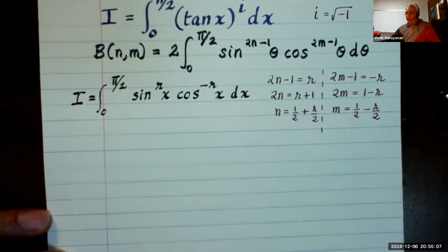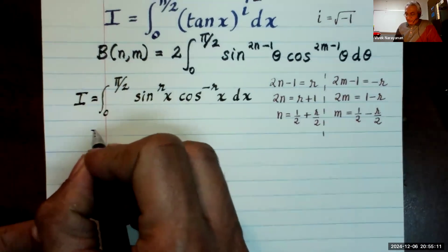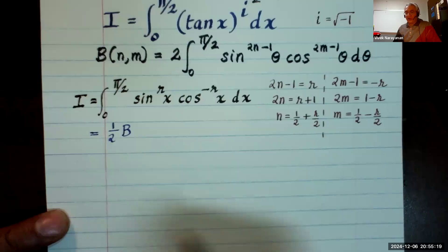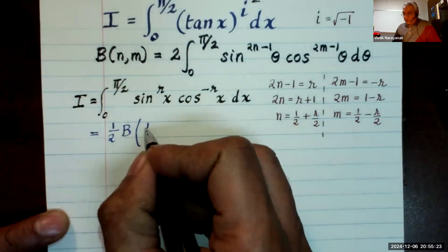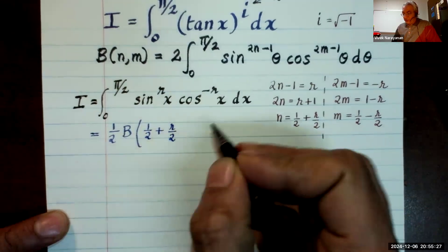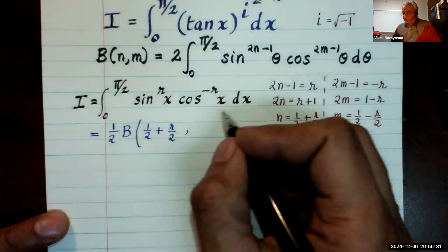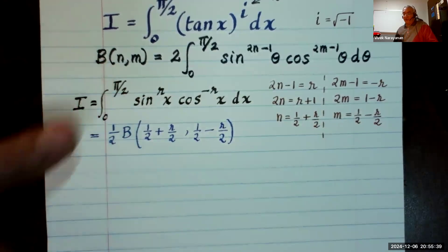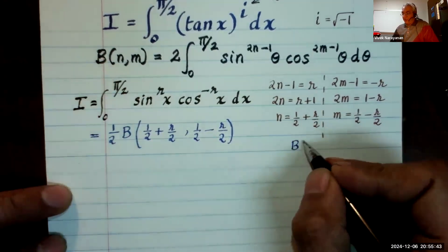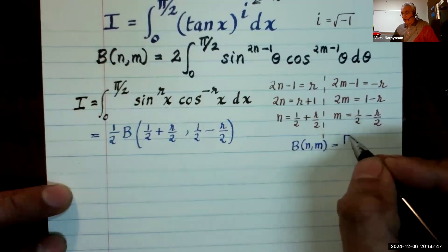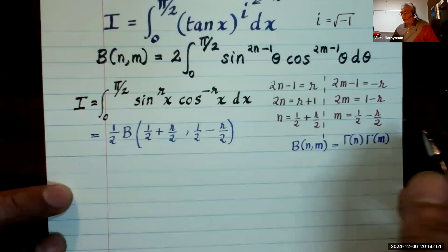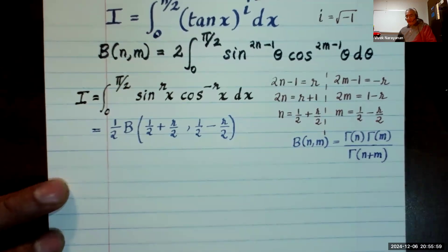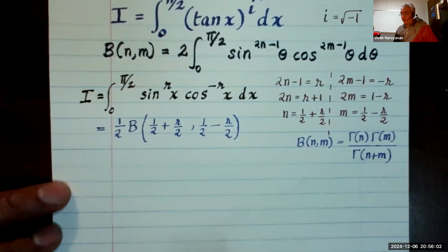All right, that looks really good. So now I can write my integral I as being equal to 1/2 beta of n, which is 1/2 plus r/2, comma m, which is 1/2 minus r/2. Now if you remember, beta nm can also be written in terms of gamma. So that's a popular formula: beta nm can be written as gamma n times gamma m over gamma of n plus m. Okay, there will be videos where I explore that.